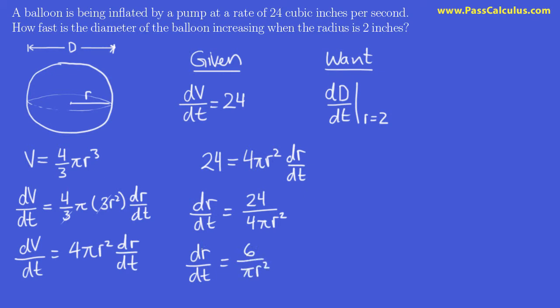Now we're in a position to find dr/dt when r is 2. dr/dt when r equals 2 is easy to find, we just replace r by 2. That's 6 over pi times 4. 6 over 4 is 3 over 2, so that's 3 over 2 pi.